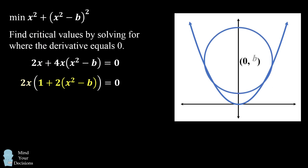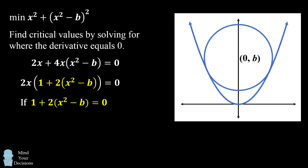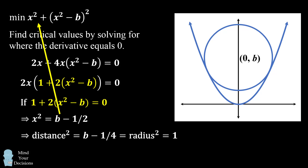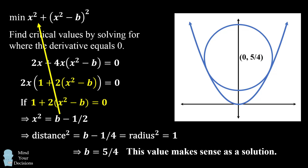So we then consider the other possibility: what if 1 plus 2 times the quantity (x² minus b) equals zero? We solve this equation to get that x squared equals b minus one half. We substitute into the distance squared function, and this leads to the equation that the distance squared equals b minus one fourth, which equals the radius squared, which equals 1. Therefore, b is equal to 5 fourths. When we try that, it turns out to be a sensible solution, and this is indeed the center of the circle.